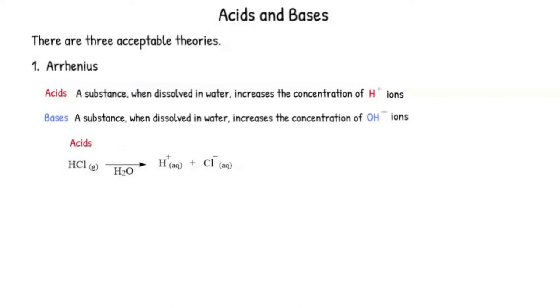For acids, HCl gas, when dissolved in water, produces H-plus aqueous ions plus Cl-minus aqueous ions. For bases, calcium hydroxide solid, when dissolved in water, gives calcium 2-plus aqueous ions plus hydroxide ions aqueous.